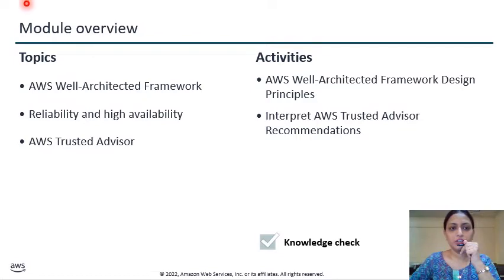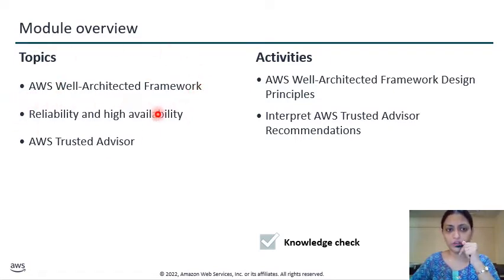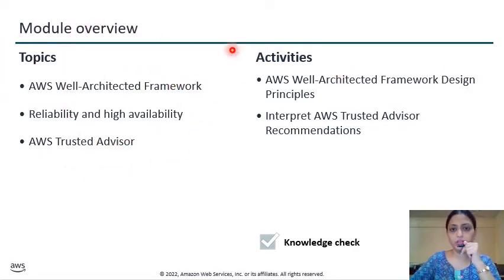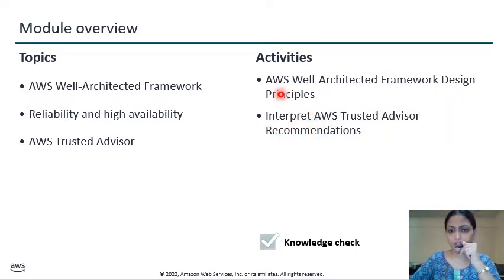Before proceeding, it is necessary to understand the module overview. This particular module consists of the following topics: first we will discuss the AWS Well-Architected Framework, then Reliability and High Availability, then we will discuss AWS Trusted Advisor. After proper understanding of these topics, you will have two activities — one for Design Framework and another for Interpret AWS Trusted Advisor.